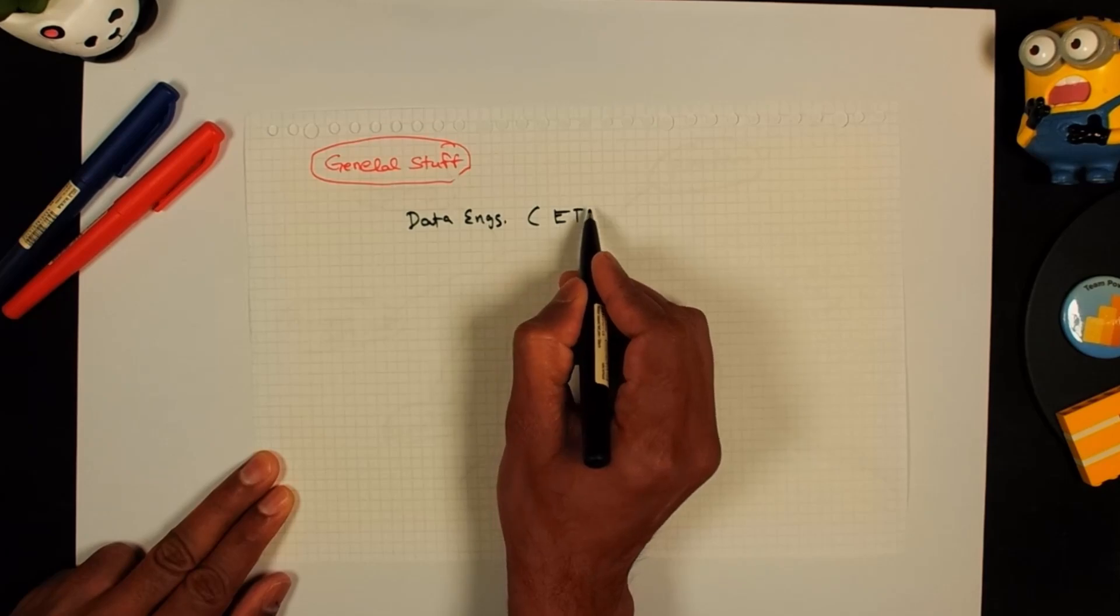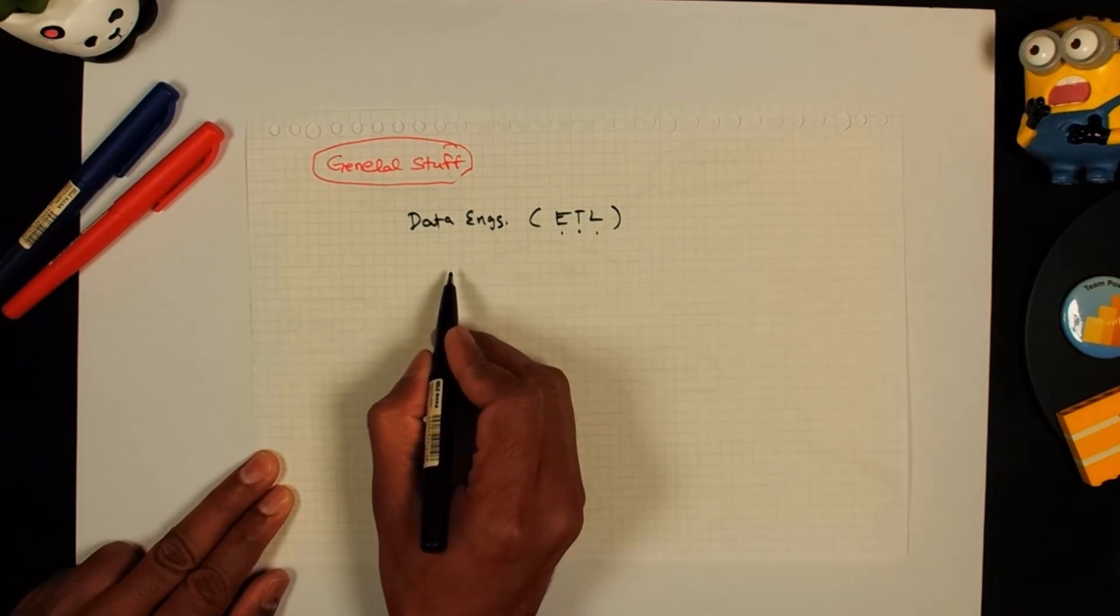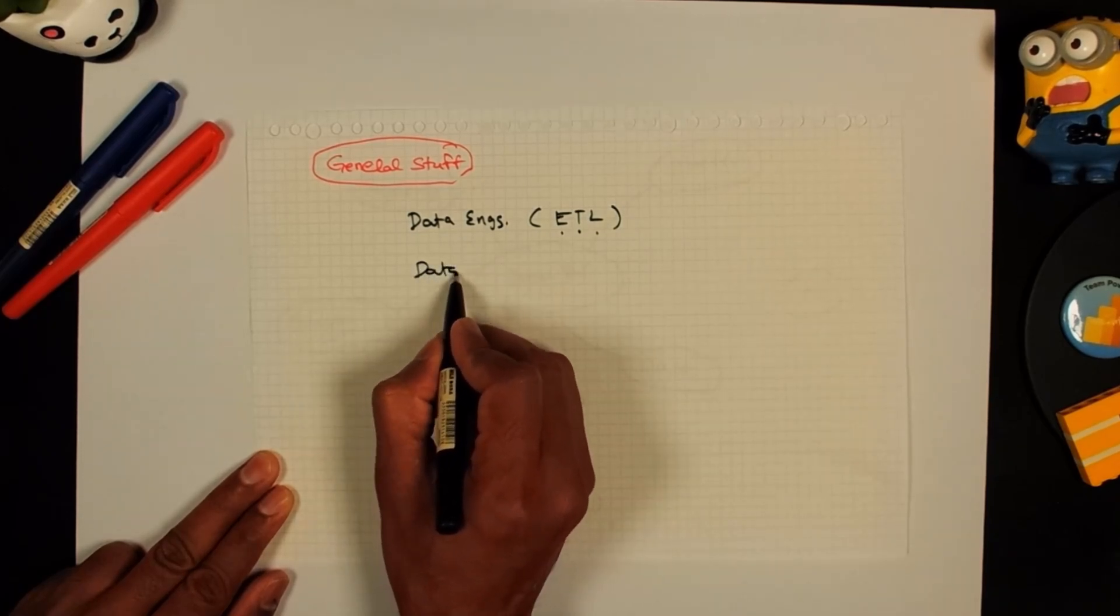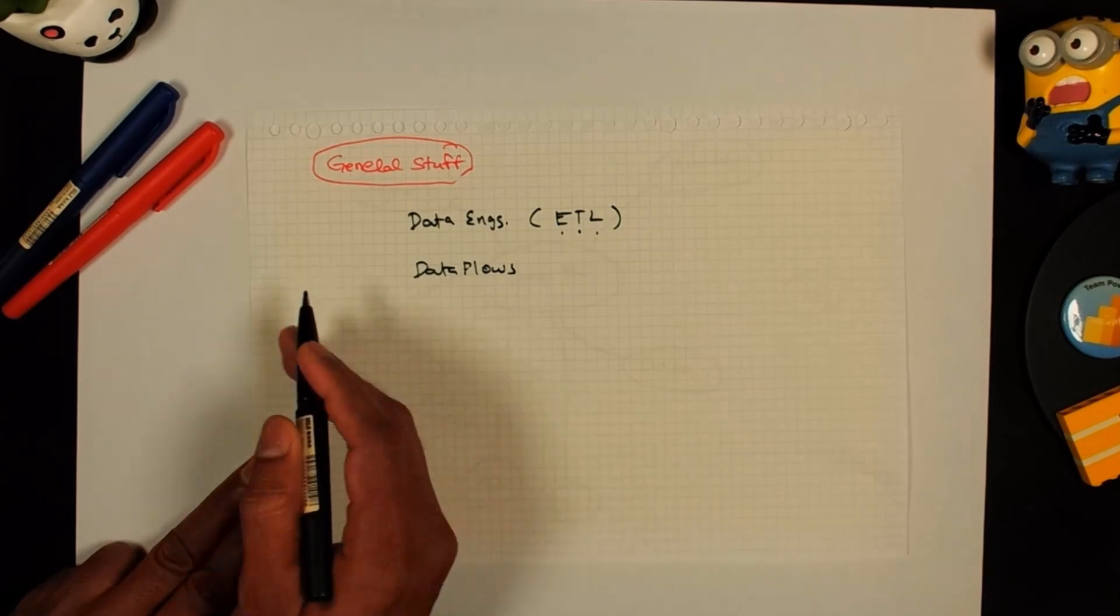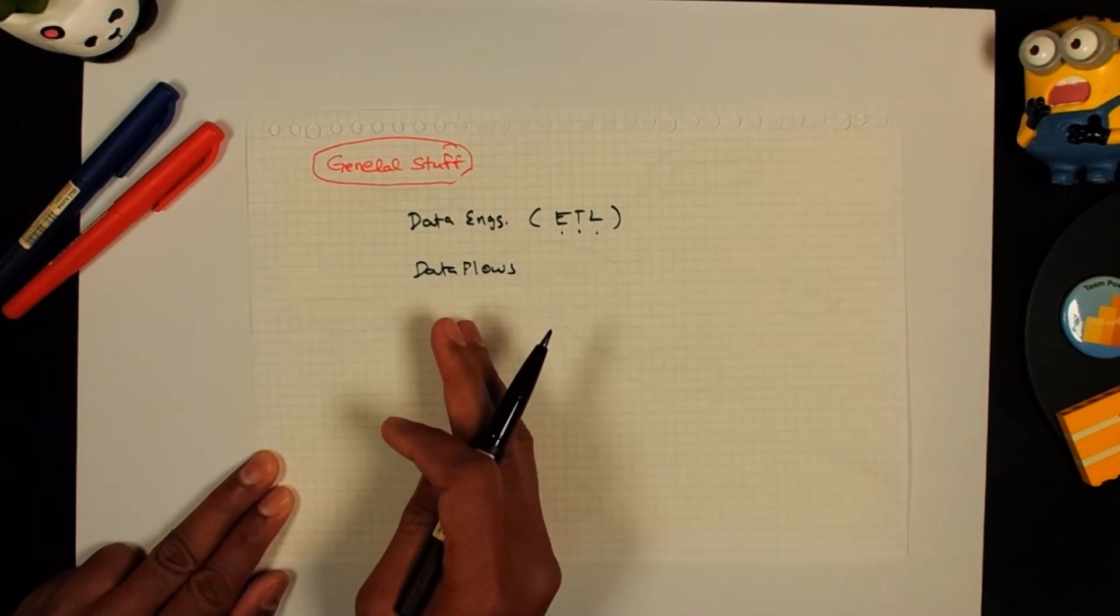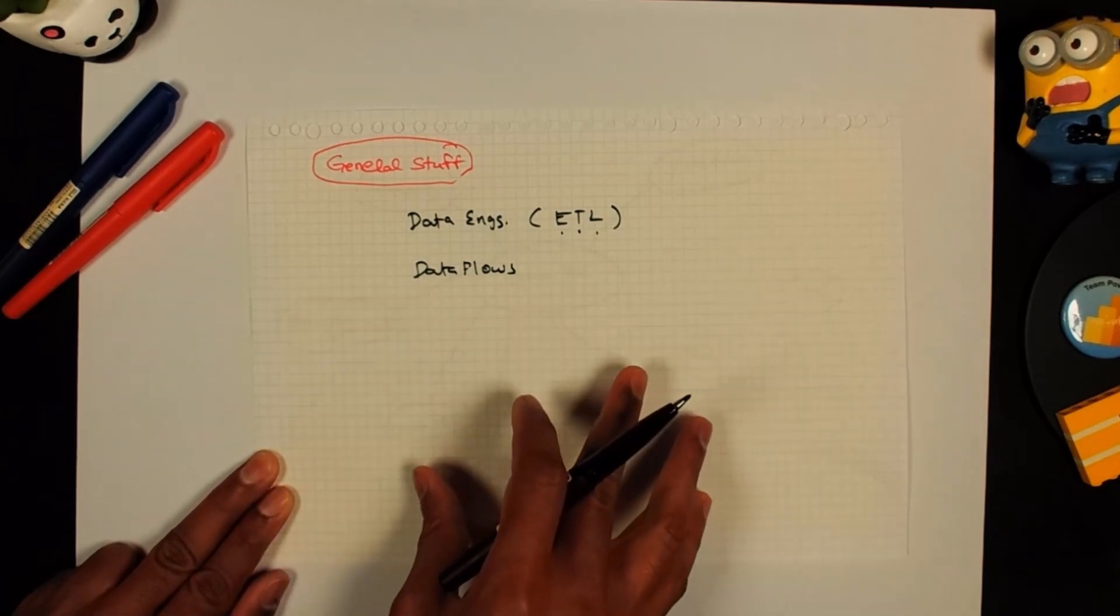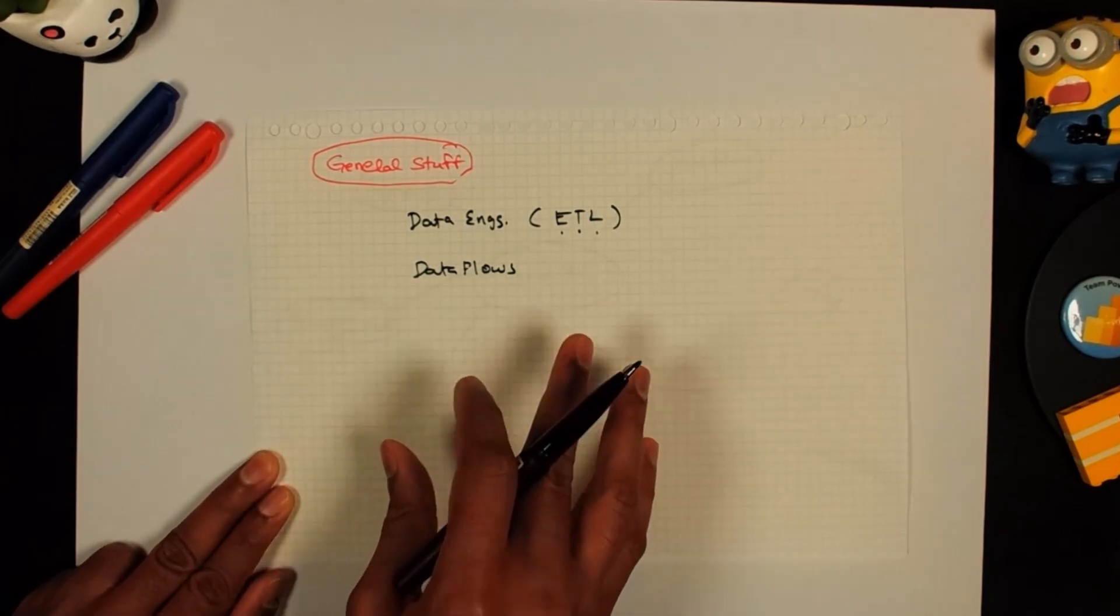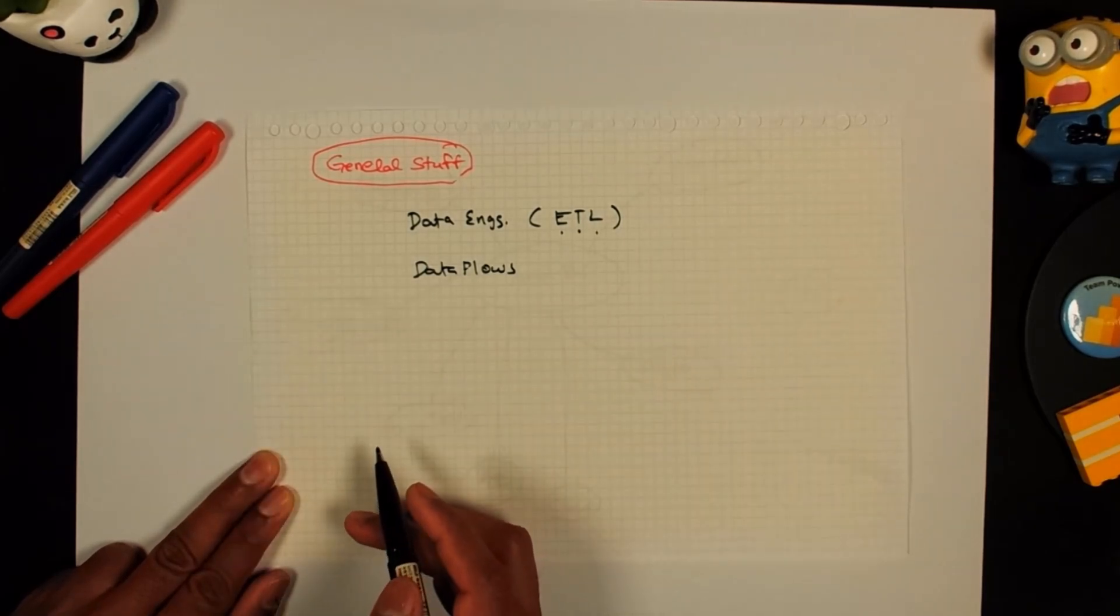There is a subword that we use within this called ETL that is extract the data, transform the data and load the data. Now Power BI offers a solution called data flows which is nothing but an ETL process wherein you are extracting the data, you are applying Power Query steps on top of the data and then you are loading that data so that the data is available for anybody to either directly analyze or build Power BI reports or use it as part of solutions.